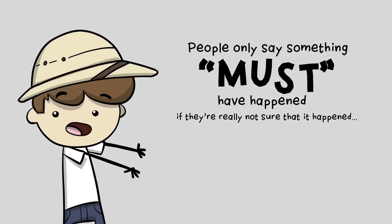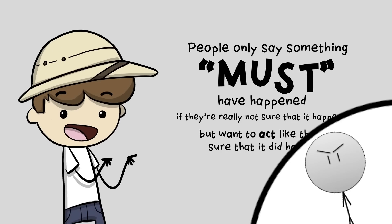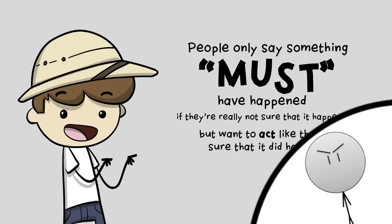People only say something must have happened if they're really not sure that it happened, but want to act like they're sure that it did. Essentially you're arguing semantics here. I don't disagree with the language used, because according to what we know about biochemistry and early earth conditions, it's a logical conclusion to use standard past tense or the word 'must' when describing these processes. If I walk into a crime scene and see someone bleeding from their abdomen with a knife in it, that person 'must have been stabbed.' I wasn't there to witness it, but the conclusion is logical because we can see the aftermath. The same idea applies to abiogenesis. Your video would be better if you actually gave arguments against the conclusion made by the science, rather than complain about the language used.